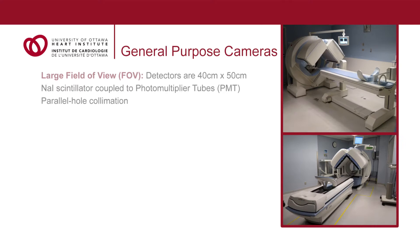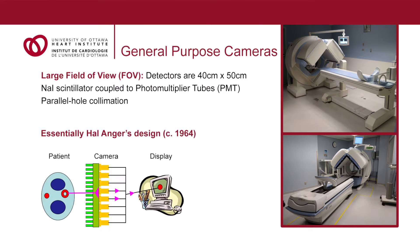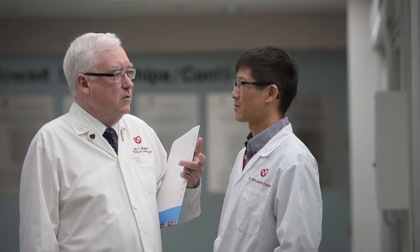SPECT imaging has been used for measuring myocardial blood flow and reserve for many years. In the past we used conventional cameras which consisted of two or three heads rotating around the patient body. These early methods resulted in data that was useful but not very accurate and not that reproducible.